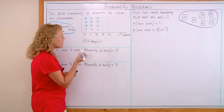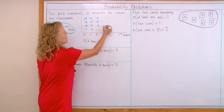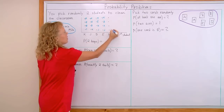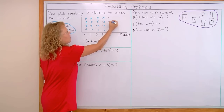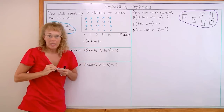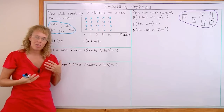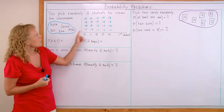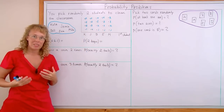If the first student is Eva, then the second one would be Jamie, Katie, Bill, or Mike. And so on. These dots represent all the possible outcomes of this situation, and we have 20 possible outcomes in total.